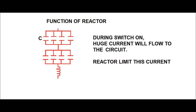Now, what is the function of the reactor connected in series in each phase of each star connection? Whenever the capacitor bank is switched on, a huge inrush current flows due to the presence of the capacitance. To limit this inrush current, a series reactor is used, connected in series with the capacitor unit in each phase of each star connection.